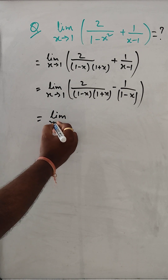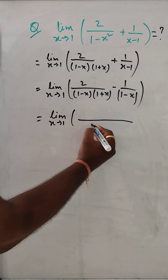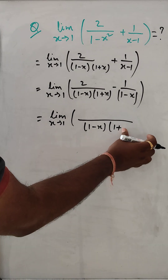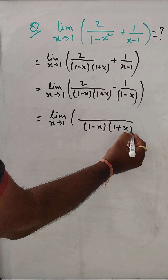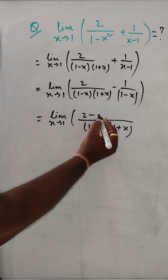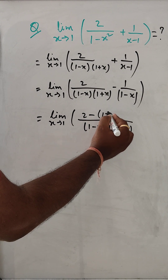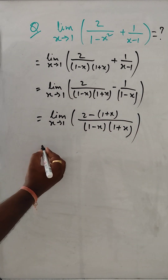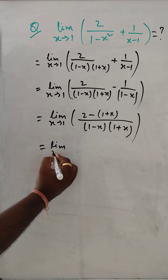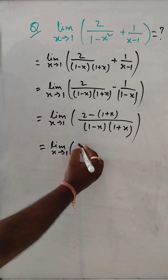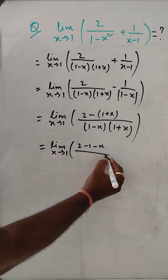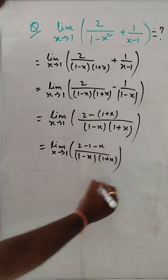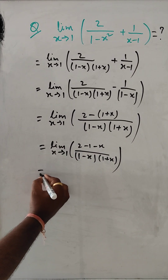Limit x tends to 1. Taking LCM of (1 minus x)(1 plus x), the numerator becomes 2 minus (1 plus x), which simplifies to 2 minus 1 minus x. So limit x tends to 1, that gives us (1 minus x) in the numerator.